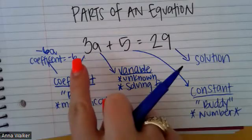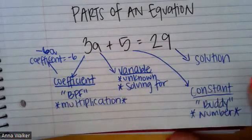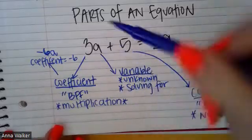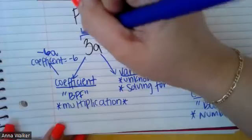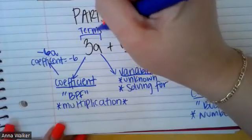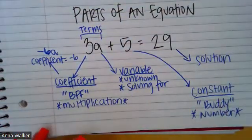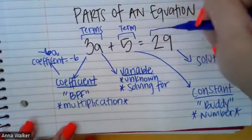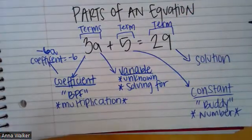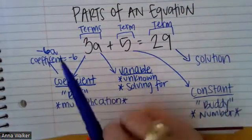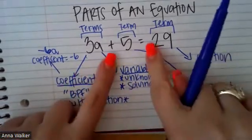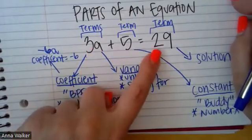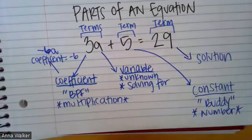When we look at the different parts of the equation — 3A, 5, and 29 — these are called terms. This will come into play in our next video when we talk about combining like terms. If I were to ask how many terms are in this equation, you look at what's in between the mathematical symbols and count them: 3A, 5, and 29 — that's three terms in this equation.